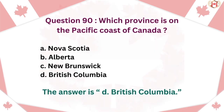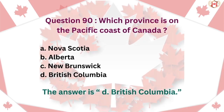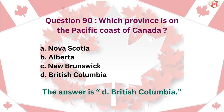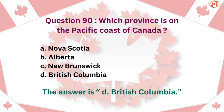Question 90: Which provinces are on the Pacific coast of Canada? A. Nova Scotia, B. Alberta, C. New Brunswick, D. British Columbia. The answer is D. British Columbia.